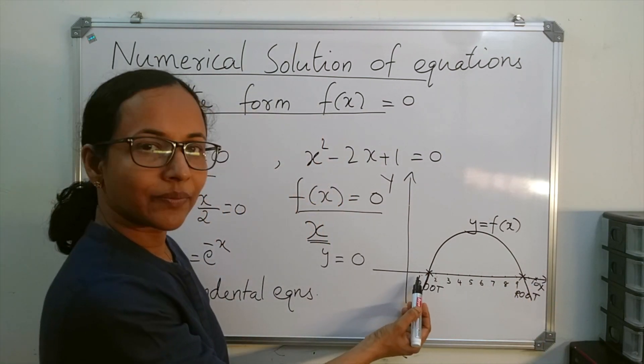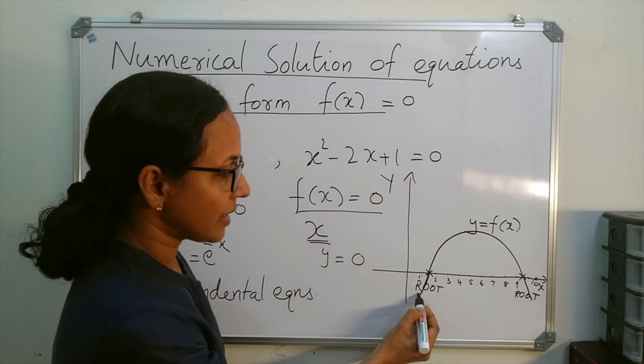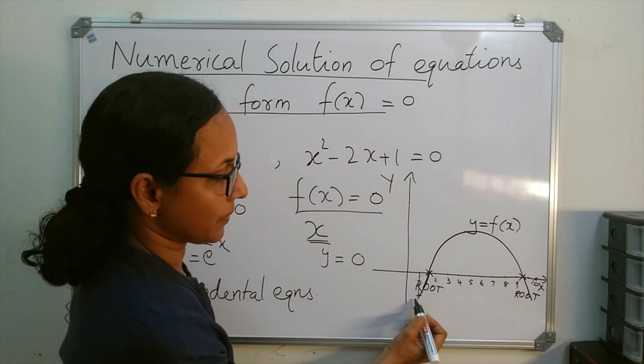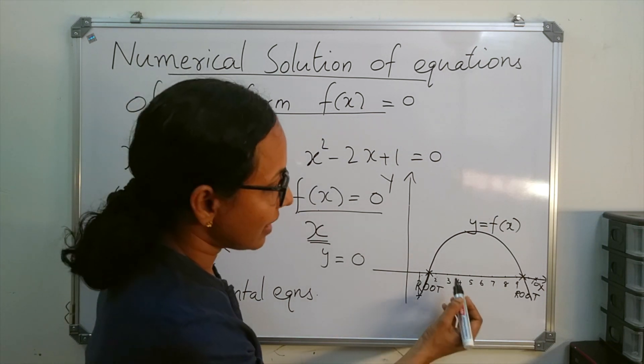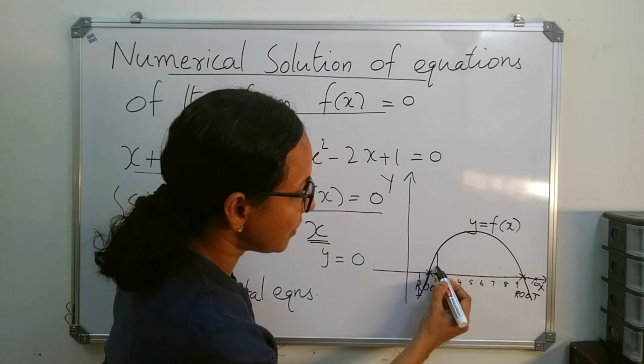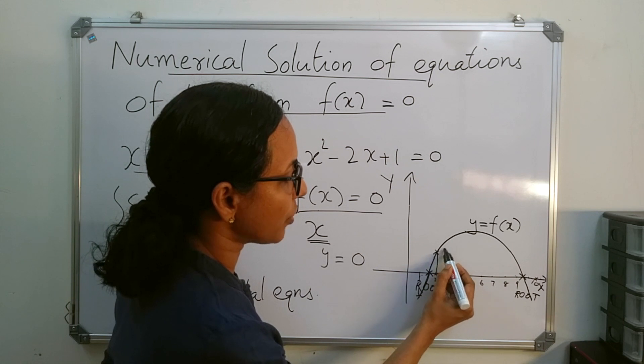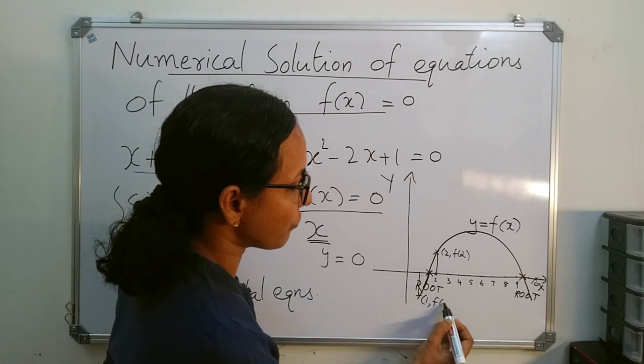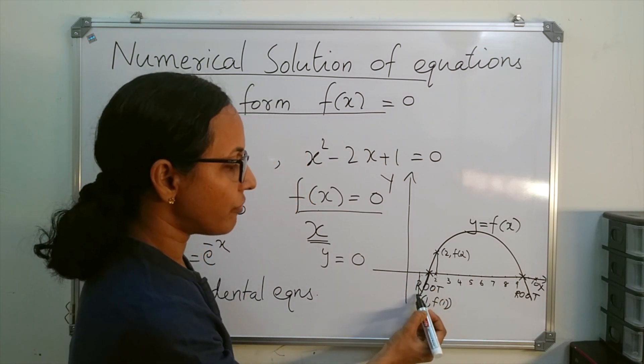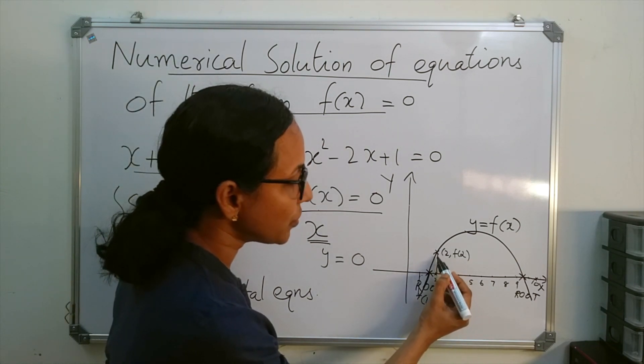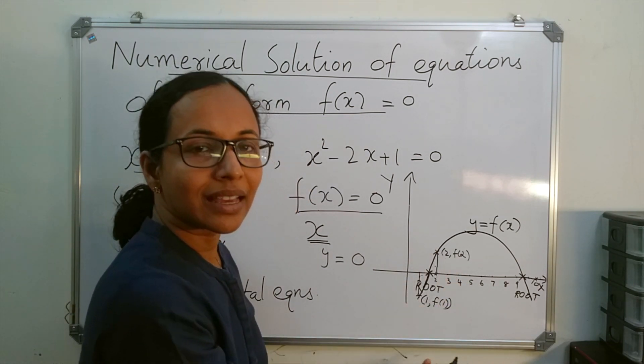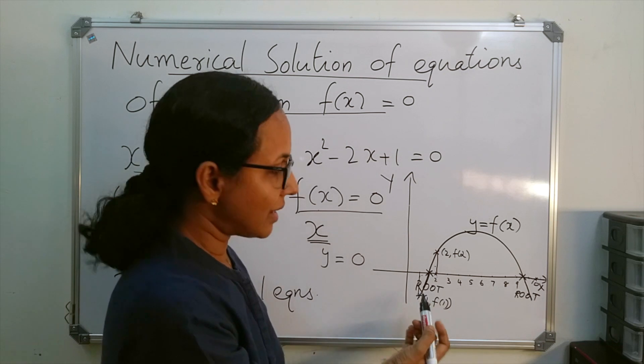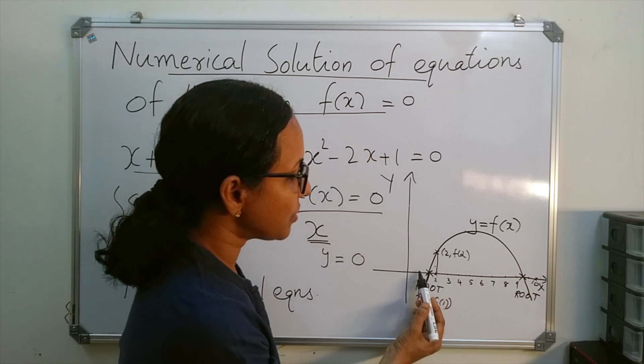When x = 1, f(1) is a negative number, and at this point we have f(2). This is the point (2, f(2)) and this is the point (1, f(1)). So f(1) is negative and f(2) is positive. When f(1) and f(2) are of opposite signs, the root lies between 1 and 2.